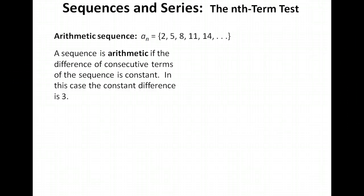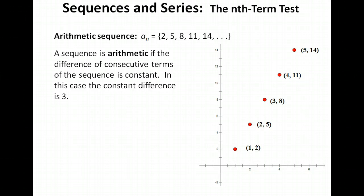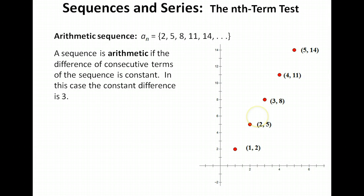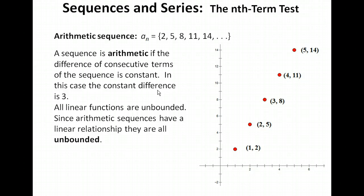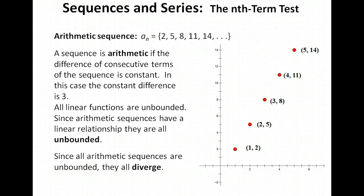Let's take a look at these terms of the sequence on the graph. Remember, with sequences we're using the set of natural numbers for our domain. So our first term of the sequence was 2, giving us the ordered pair (1, 2). Our second term was 5, giving us (2, 5), and so on. You can see there is a linear relationship, and since all linear functions are unbounded, these terms go to infinity — so all arithmetic sequences diverge.